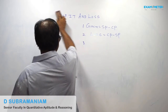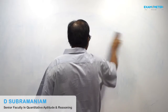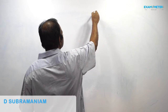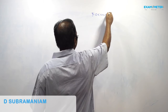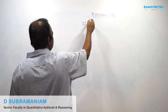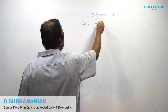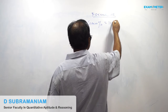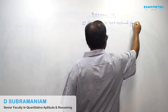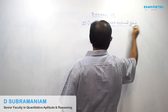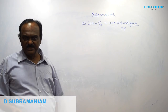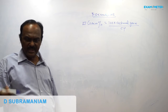Now write down the important formulas. First Formula: Gain Percent is equal to 100 multiplied by actual gain, divided by Cost Price. That is, Gain% = (100 × actual gain) / CP.